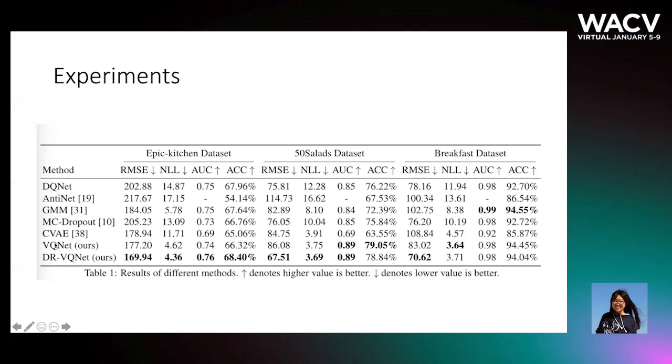This VQNet is our proposed framework with the VRM as the regression subnetwork. This DRVQNet is our proposed framework with DRVRM as the regression subnetwork. We can see that our proposed methods perform much better than other methods. In particular, this DRVQNet can generate more diverse and precise anticipation of the starting moment.